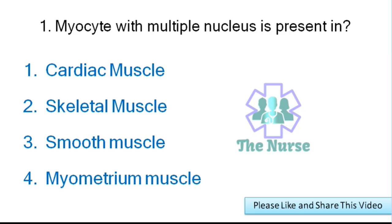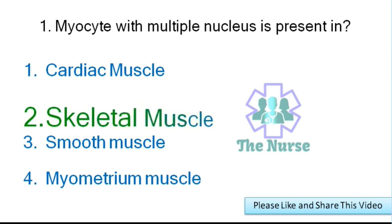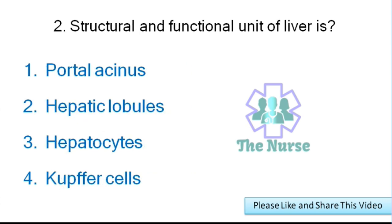First question: Myocyte with multiple nucleus is present in which muscle? Cardiac muscle, skeletal muscle, smooth muscle, or myometrium muscle. Correct answer: skeletal muscle.